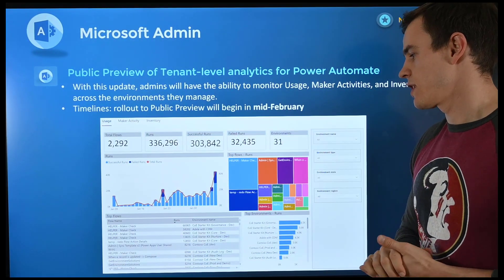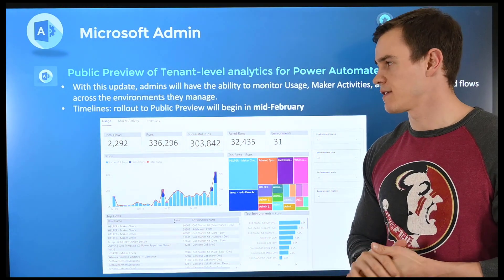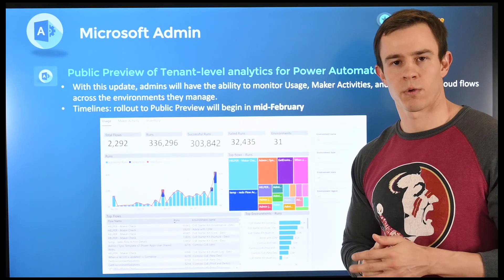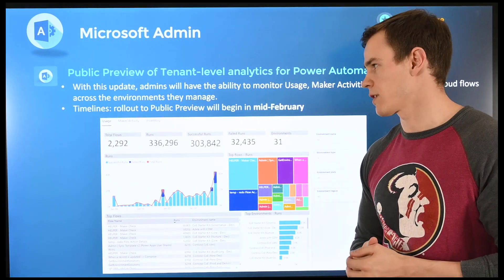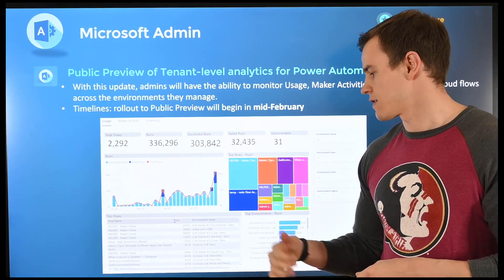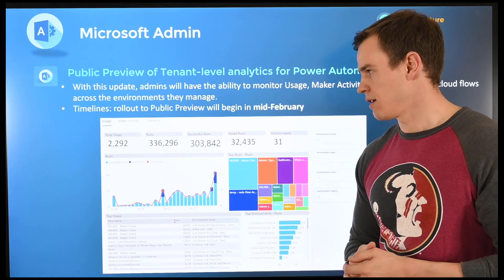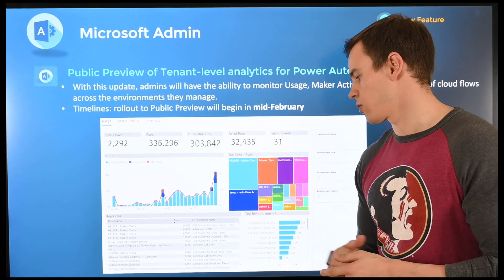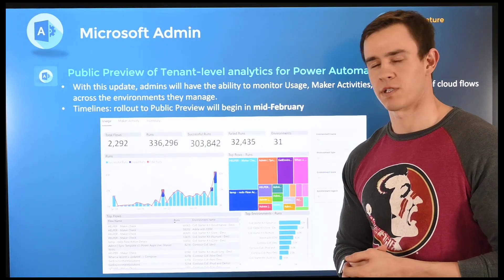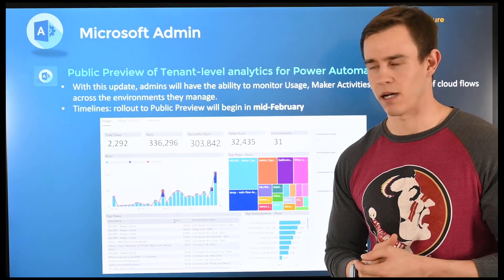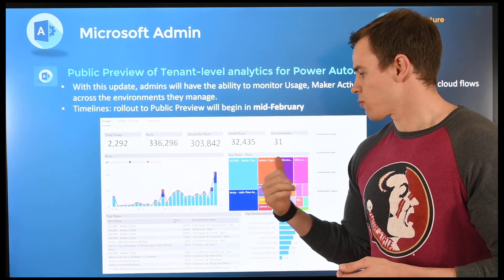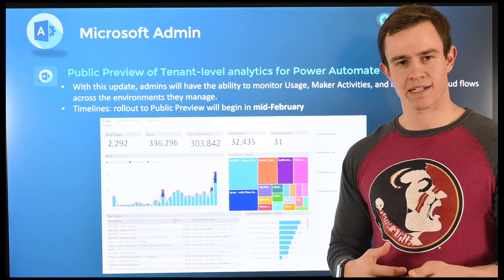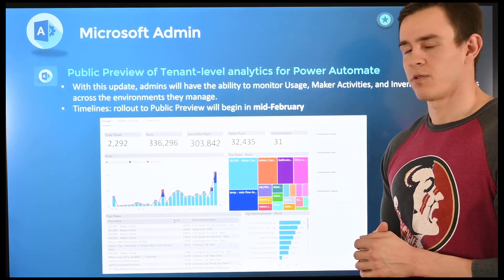Next is new reporting coming in for Power Automate — a usage report. Power Automate is becoming more popular for running low-code, no-code apps in customer environments. This report is connected to Power BI within the admin center of a tenant, allowing you to view usage and individual statistics about the Power Apps within the organization. It rolled out to public preview in mid-February, so if you're in the public preview you can probably access it now. GA dates are still TBD.